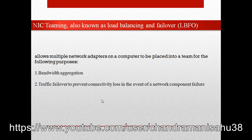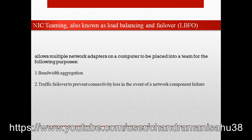For example, suppose I have a server named cmsahoo.com with three network cards — NIC1, NIC2, and NIC3. Each NIC card has 1 Gbps. Normally data packets travel through NIC1, but since I have three NIC cards, the bandwidth will aggregate — so instead of 1 Gbps, you will get 3 Gbps per second. This is the bandwidth aggregation feature of NIC Teaming.